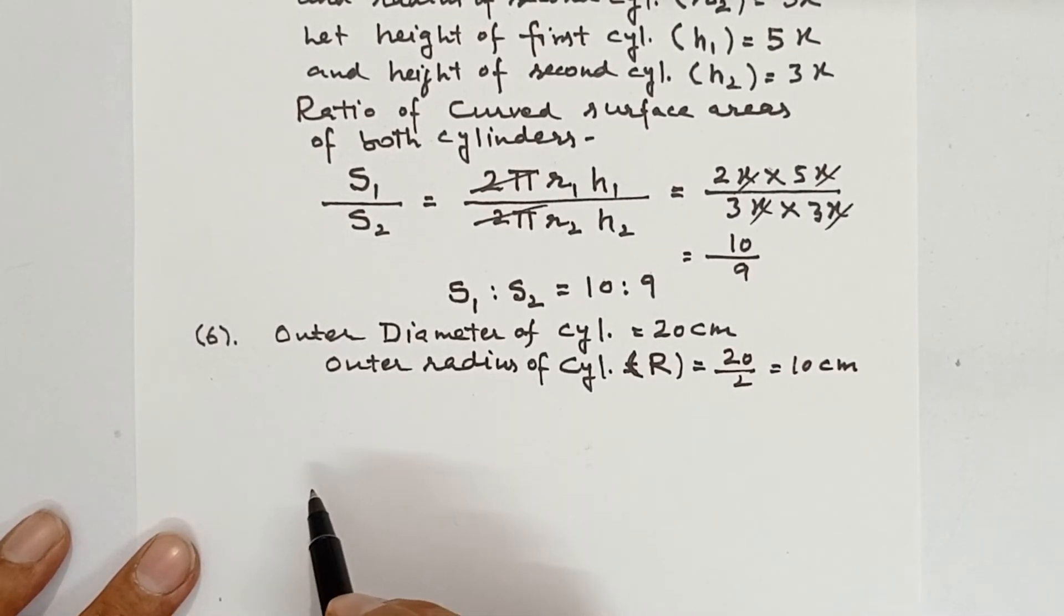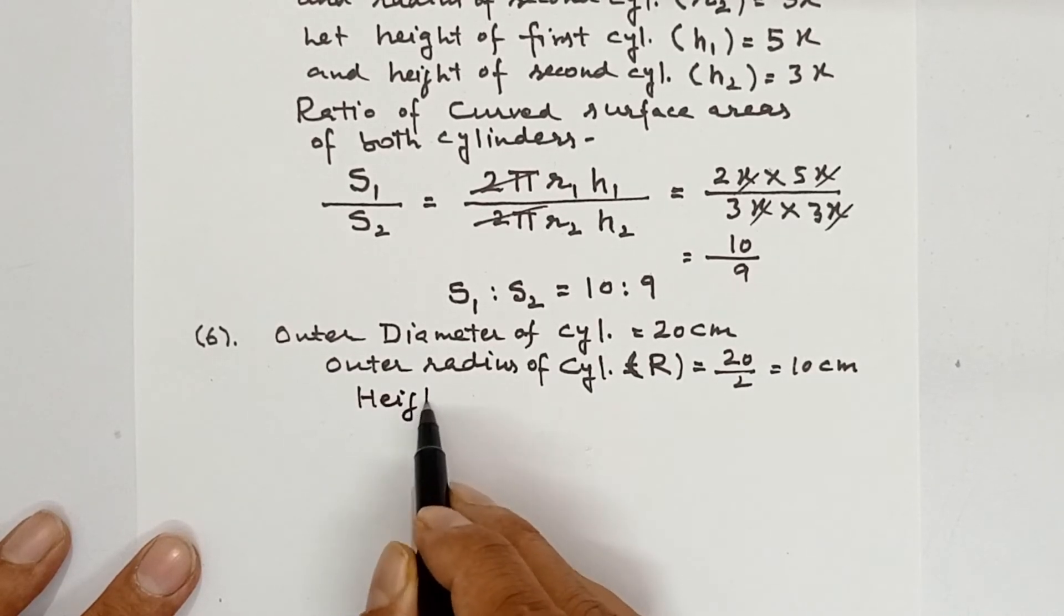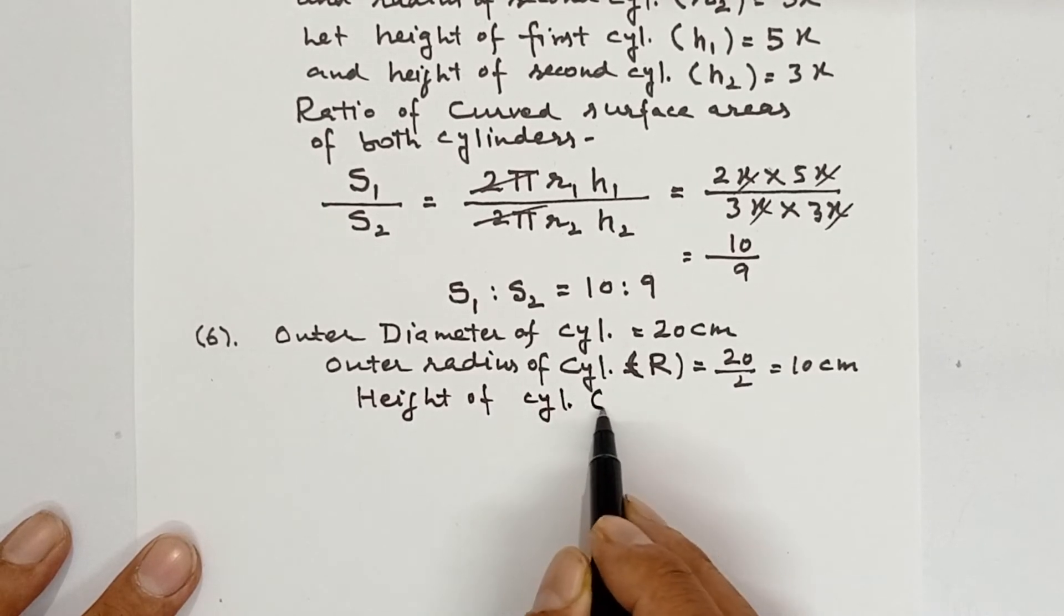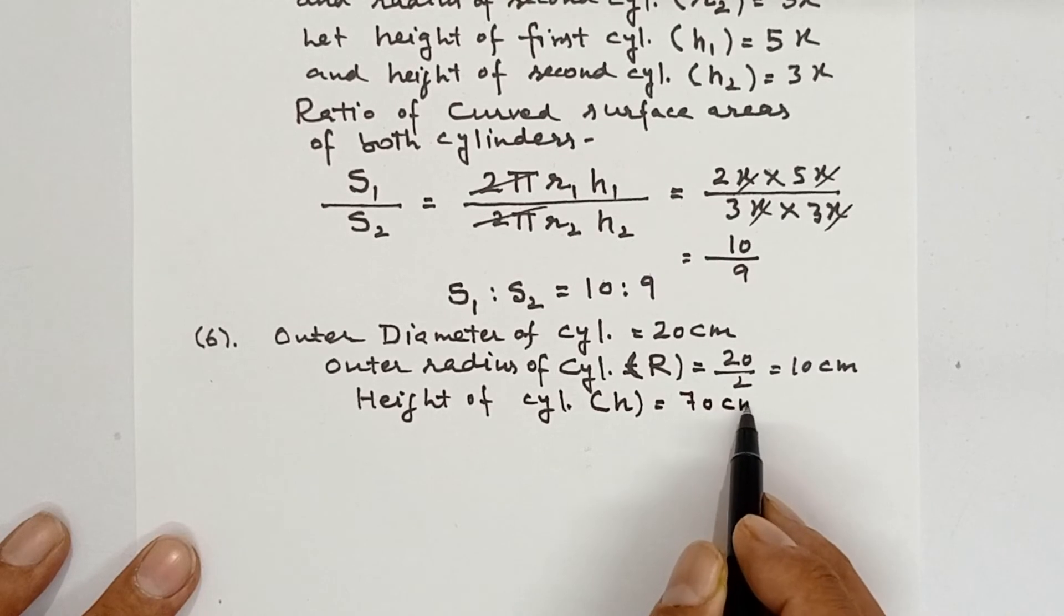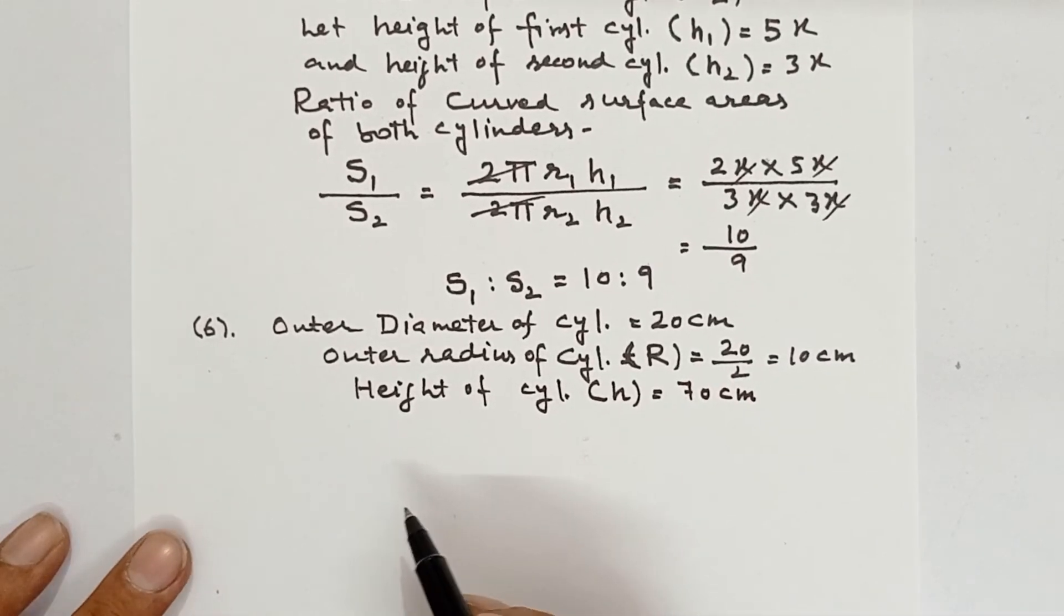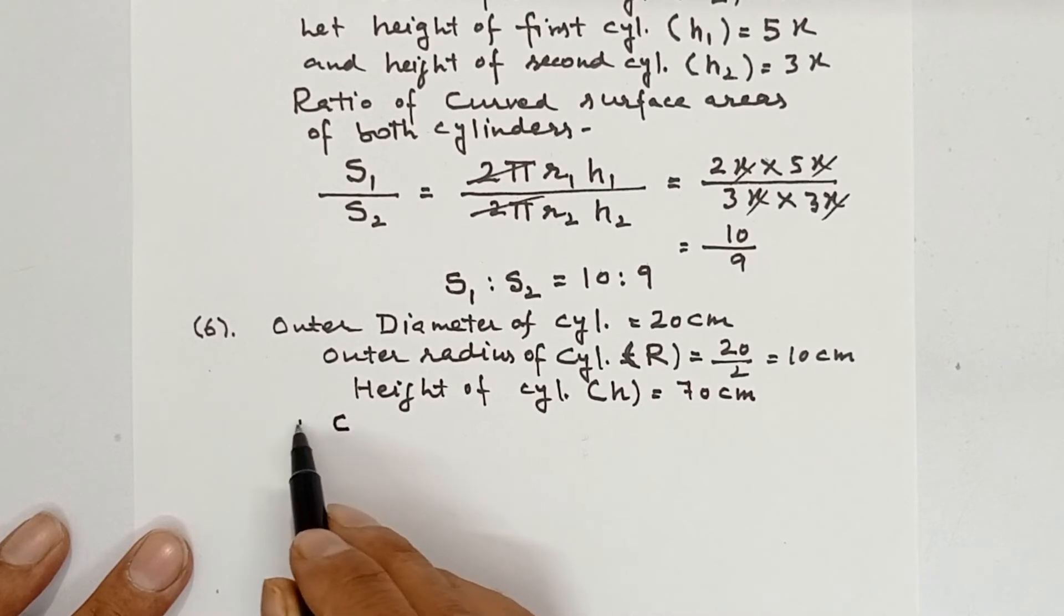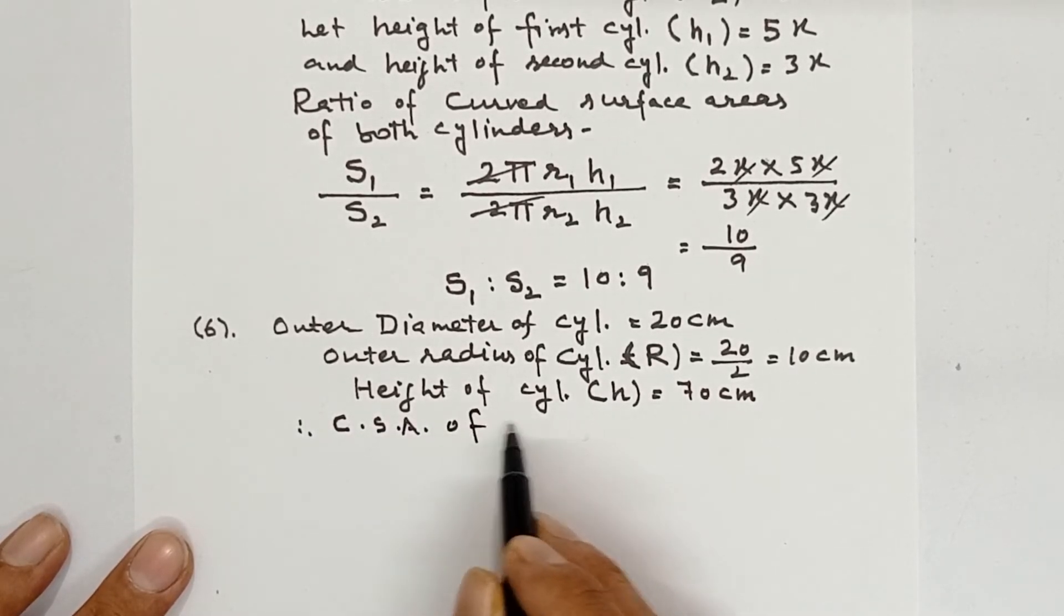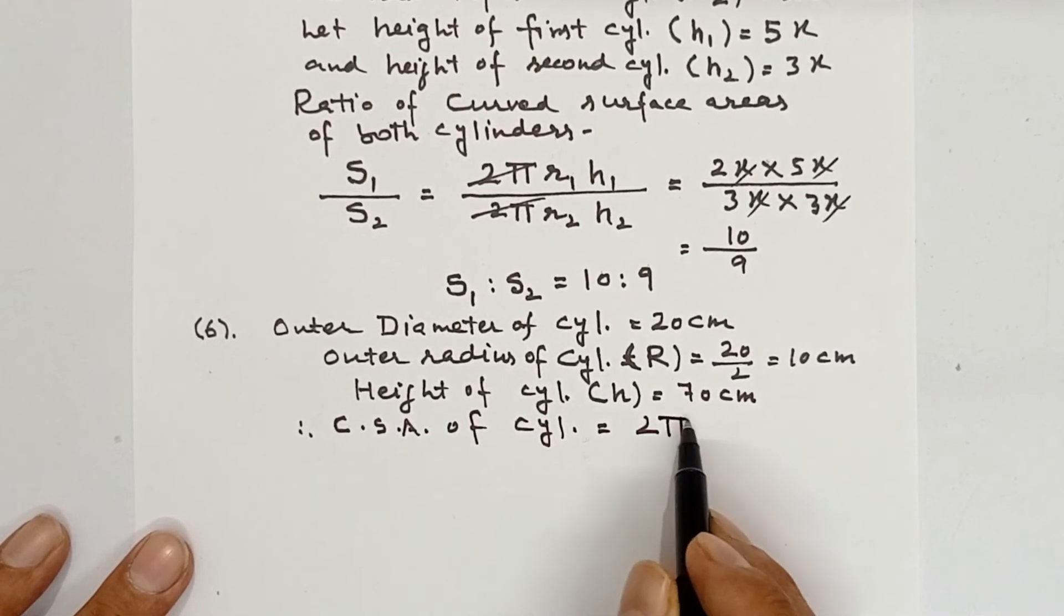Another thing which is given, that is height of the cylinder. Height of cylinder is denoted by h and it is 70 cm. We need to get painted the curved surface. Therefore, curved surface area of cylinder, the formula is 2πrh.